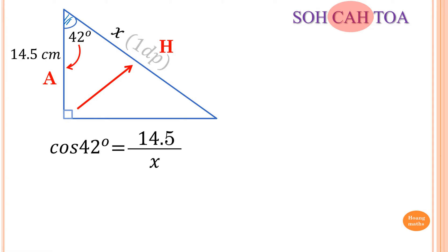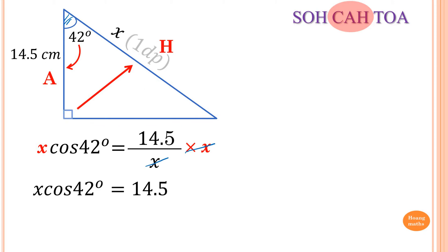H is X. Now we multiply X on both sides because we want to solve for X. So we multiply X on the right and do the same on the left, so this X is gone. Now X times cos of 42 is equal to 14.5.